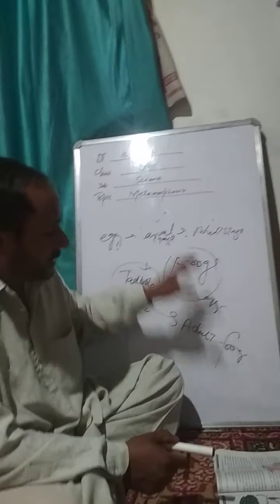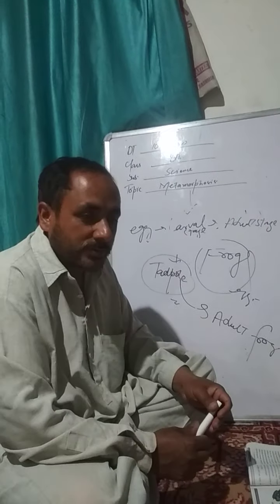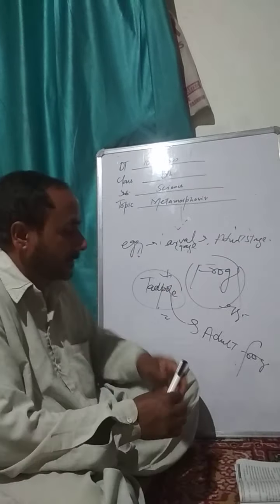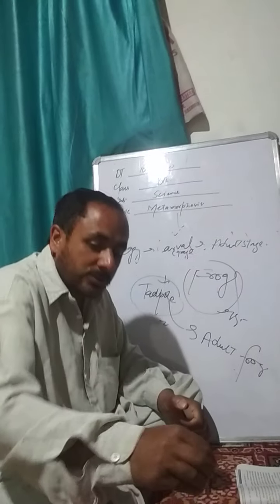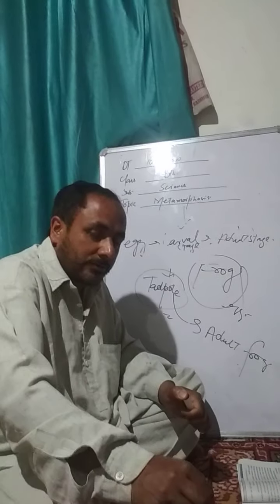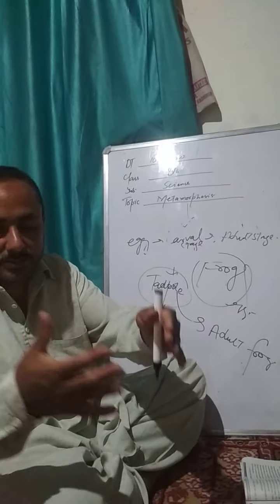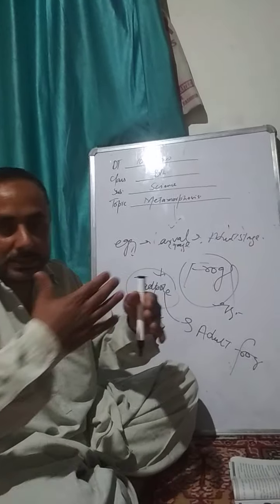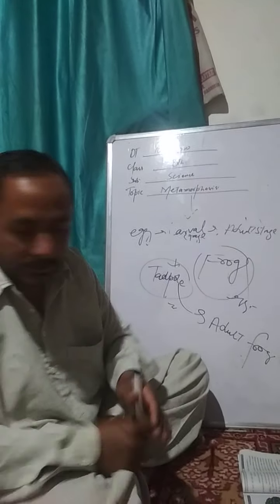Metamorphosis — what is going to happen? This is the process: this is the larva, changing into an adult. What is the larva? This is the intermediate stage between the egg and the adult.